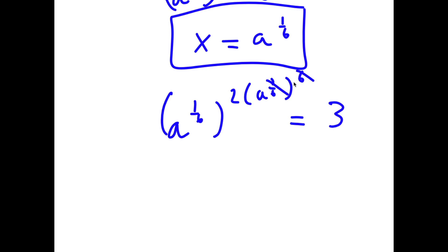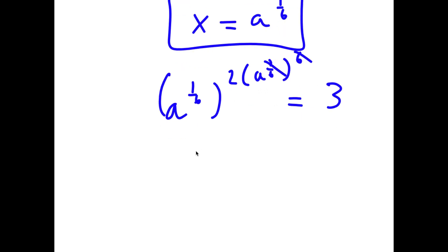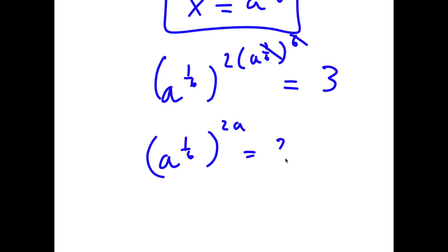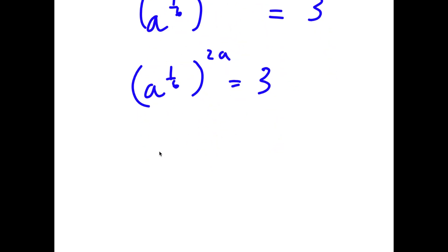Now 1 over 6 and 6 cancel out, so I have a to the power of 1 over 6 to the power of 2a, which equals 3. The exponent 2a over 6 simplifies to a over 3. So I have a to the power of a over 3 is equal to 3.